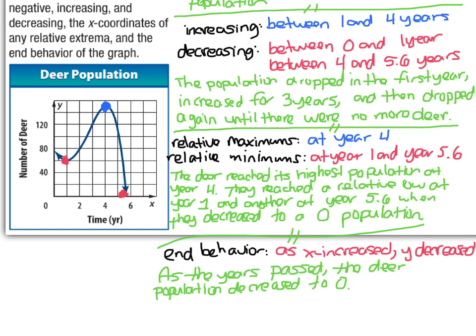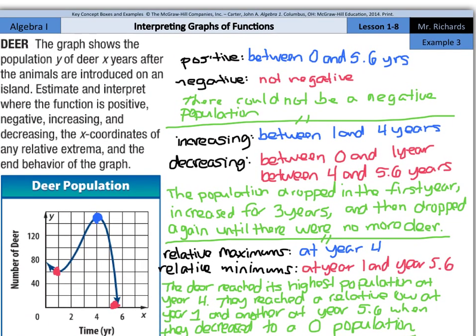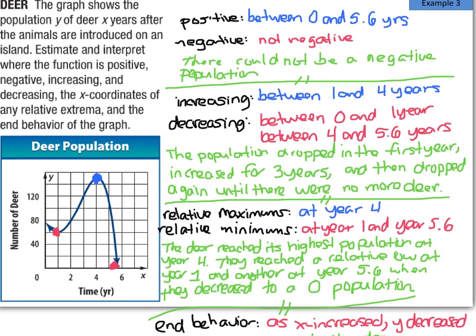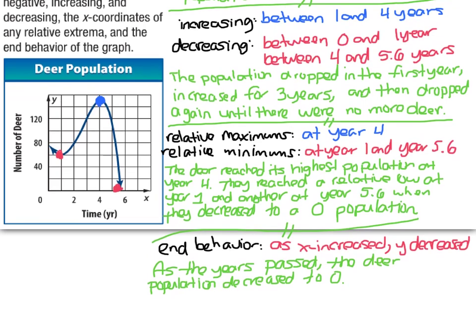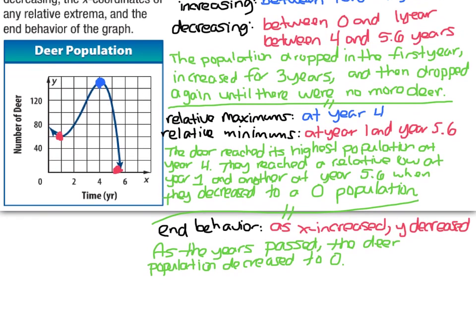When you're called on an example to describe positive, negative, increasing, decreasing, relative extrema, and the end behavior of the graph, go through and list your data for positive and negative with an interpretation, list your data for increasing and decreasing with an interpretation, list your data for maximums and minimums, and then describe the end behavior. On some graphs, you may need to look at both ends. And that is it for this lesson on interpreting graphs of functions. Good luck!